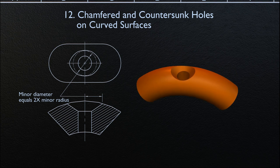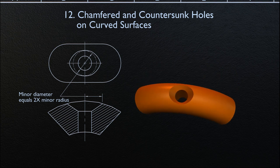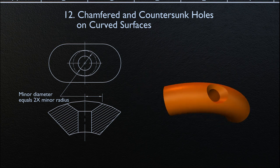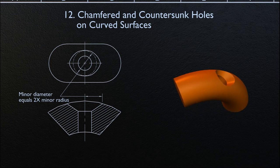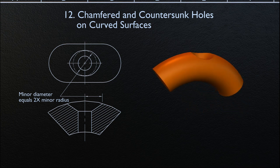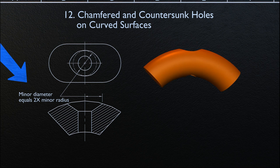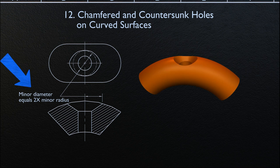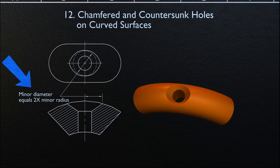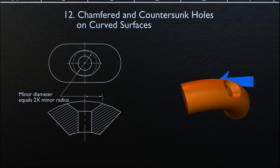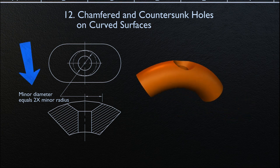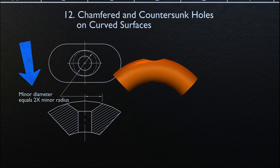Now we are going to look at chamfered and countersunk holes on curved surfaces. Where a hole is chamfered or countersunk on a curved surface, the diameter specified on the drawing applies at the minor diameter of the chamfer or countersink, as illustrated. We can also look at the 3D view of this object, where the minor diameter equals the shortest distance from the center to the edge of the countersink on the actual part.